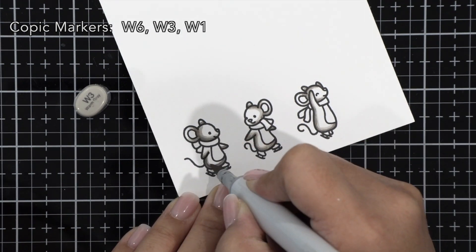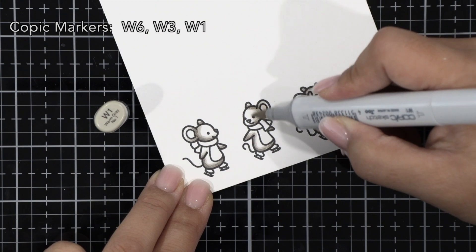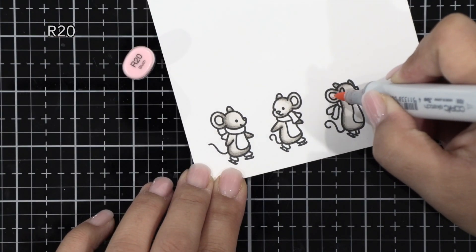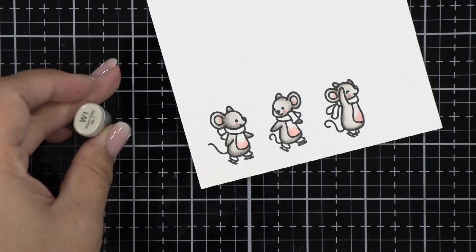Mice are pretty simple to color, so I'm going to do some shading quickly with a few warm Copic markers. I'm first adding the W6 on the bottoms and sides of my images, then adding W3, then blending it out with W1.